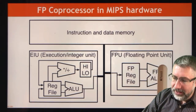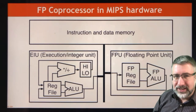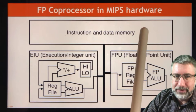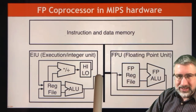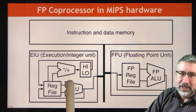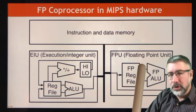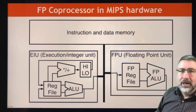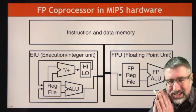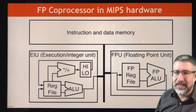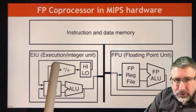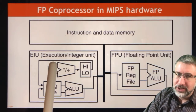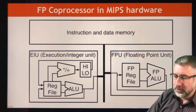Taking it a step further, you could unify memory all together — instruction and data memory all in one place — accessible via both the execution and integer unit and the floating point unit. This is starting to get into higher-level architecture that you'll learn in 301, but basically you have specialized slices of hardware for specific tasks: one for executing branches, jumps, loads, stores, and integer ALU operations, and then a separate one for floating point values.